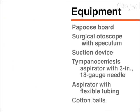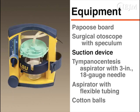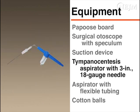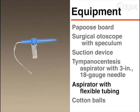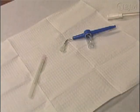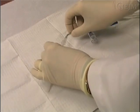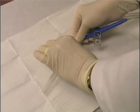The following equipment is necessary: a papoose board, a surgical otoscope with speculum, a suction device, a tympanocentesis aspirator with a 3-inch 18-gauge needle, a second aspirator with flexible tubing, and cotton balls. Attach the needle to the tympanocentesis aspirator, then attach the aspirator to the suction device.